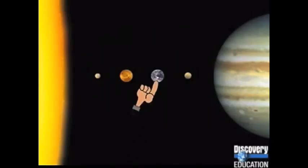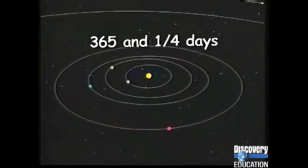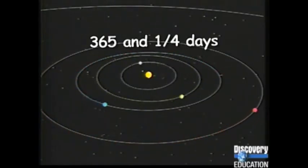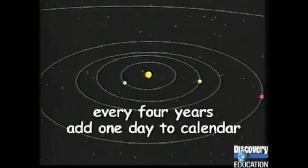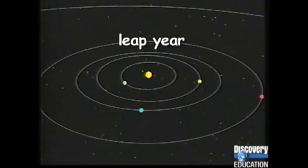Earth is the third planet from the Sun. It is called a living planet because it is constantly changing. It takes the Earth 365 and one quarter days to orbit the Sun — this is one Earth year. To make up for the fraction of a day, every four years we add one day to the calendar, making a 366-day year. To do this, we extend the month of February, making it 29 days long instead of 28 days. This event is called a leap year.